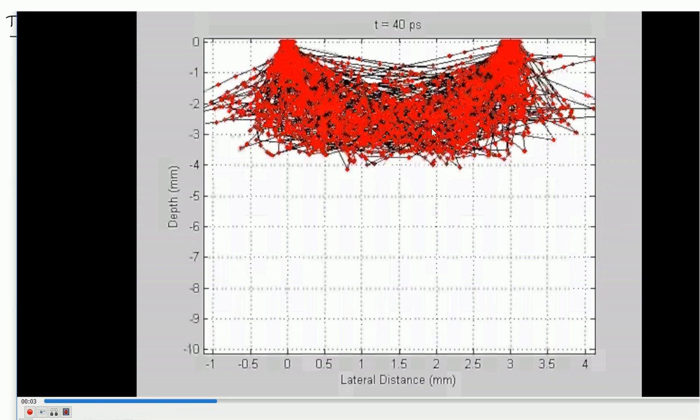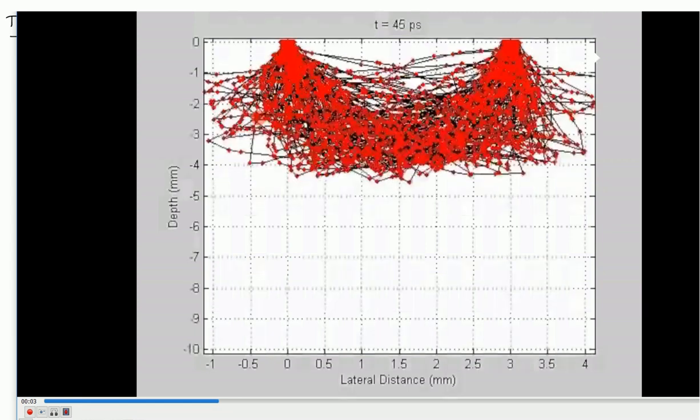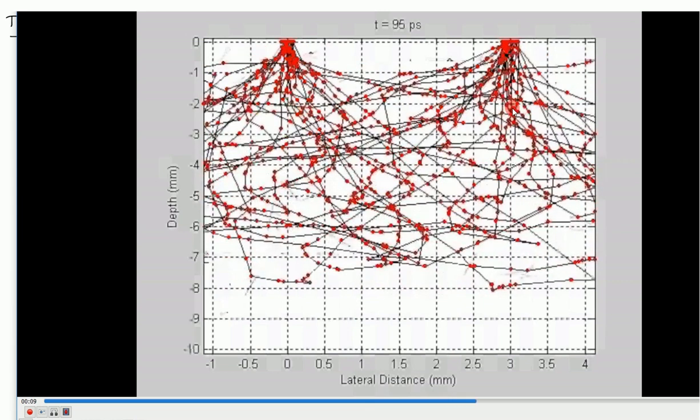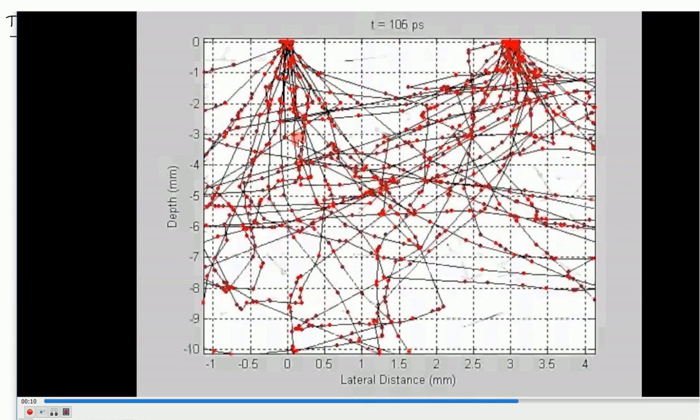This is still in the regime of the most dominantly explored space, the most common photon paths that get you from the source to the detector, although you're starting to see some paths include considerable departures. At 70 or 80 picoseconds, there isn't as much light reaching this detector anymore. These paths as an ensemble are less probable than the ones earlier because the earlier ensemble had more paths in it. More light travels for about 40 or 50 picoseconds before getting to the detector. By the time you get out to over 100 picoseconds, many fewer paths are connecting the source to the detector.